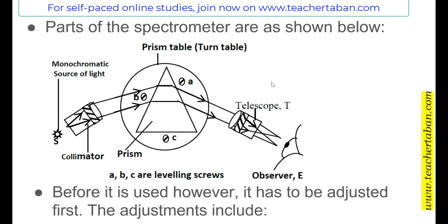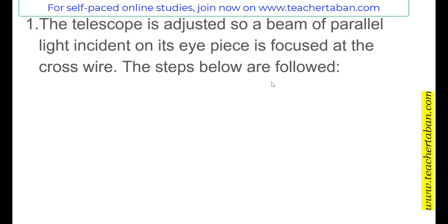The steps are basically three: adjust the telescope first, followed by the collimator, and then the turntable. In adjusting the telescope, the aim is to make sure that the light from a distant object — that is the parallel light incident onto the telescope — has its image focused onto the cross wires.